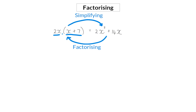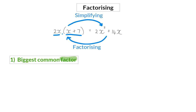We're going to have a look at the first type, which is the biggest common factor. We already know that a factor is a value that the term can be divided by. Adding the word 'common' means that the factor should be a factor for every single term in that expression, so that it is common in all terms. The last requirement is that it will also be the biggest of those common factors.